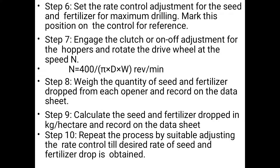Step 8: Weigh the quantity of seed and fertilizer dropped from each opener and record on the datasheet. Step 9: Calculate the seed and fertilizer drop in kg per hectare and record on the datasheet. Step 10: Repeat the process by suitably adjusting the rate control until the desired rate of seed and fertilizer drop is obtained.